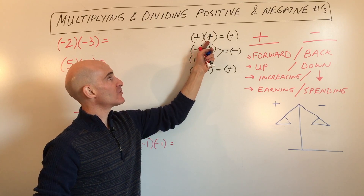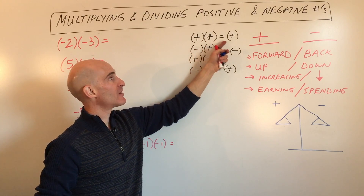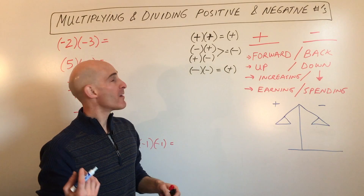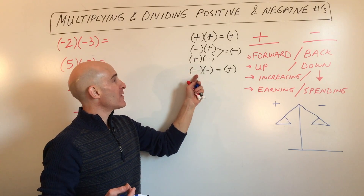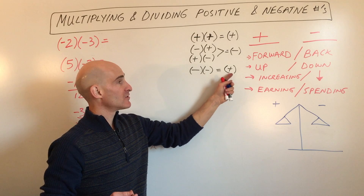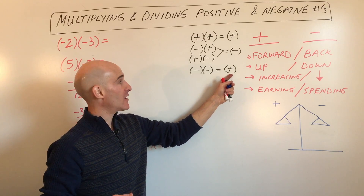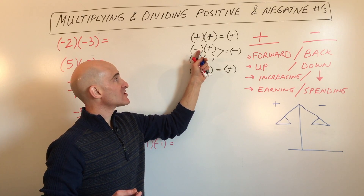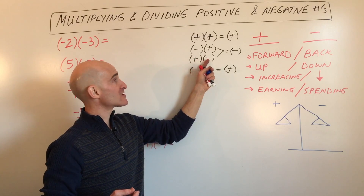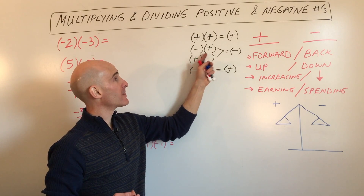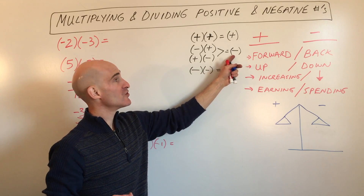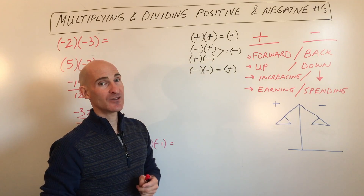If you multiply a positive number times a positive number, you get a positive. That's what you're used to from way back. When you multiply a negative number times a negative number, you get a positive number. And if one of the numbers is negative and one's positive — whether it's the positive one first and the negative one second, or vice versa — when one's negative and one's positive and you're multiplying, you get a negative number.